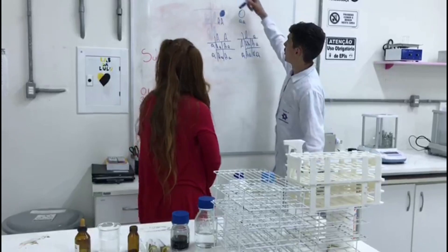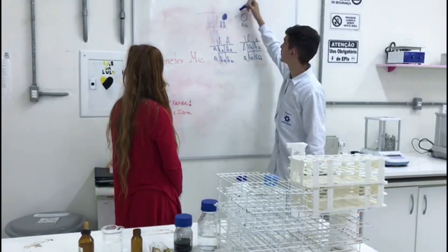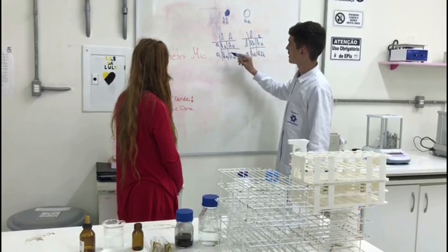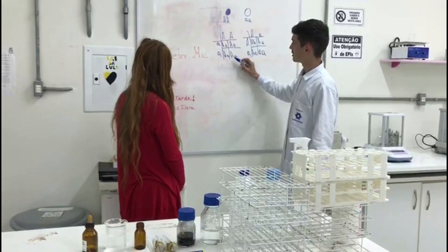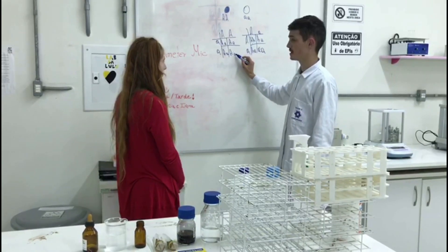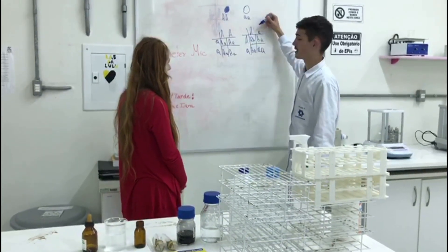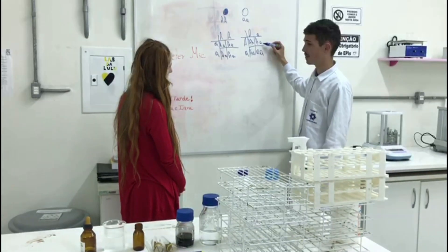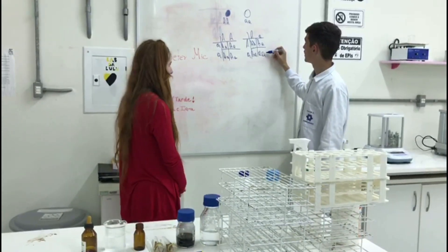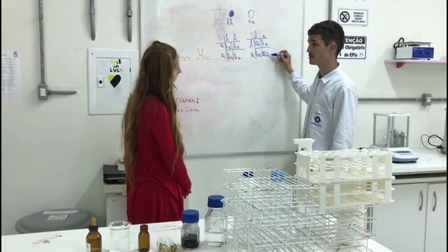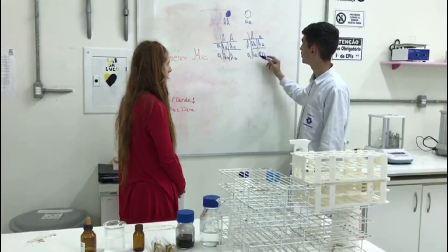Vou explicar no quadro. O alelo amarelo é 'A' maiúsculo e o verde é 'a' minúsculo. Esses são os dois alelos que elas têm. Esse aqui foi o primeiro cruzamento — todos resultaram em 'Aa', todos amarelos. Então chegamos à conclusão que o alelo 'A' é dominante sobre 'a'. Após isso, cruzamos a mesma geração novamente, e deu 75% amarelo e apenas 25% verde. E apenas quando deu 'aa' foi que apareceu o verde. Então, 'a' seria recessivo e 'A' dominante.